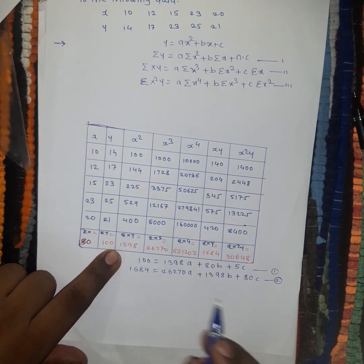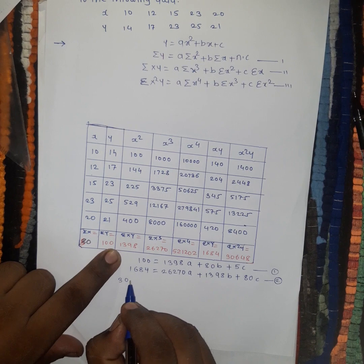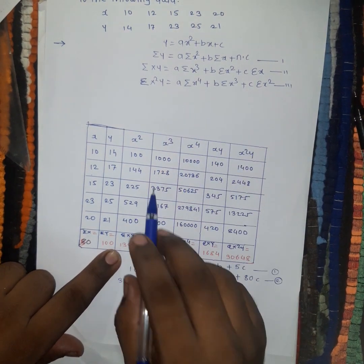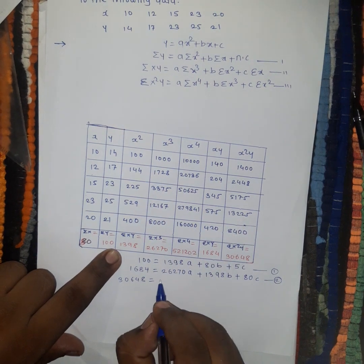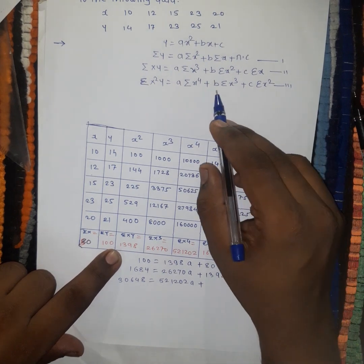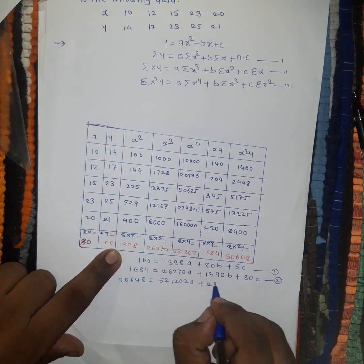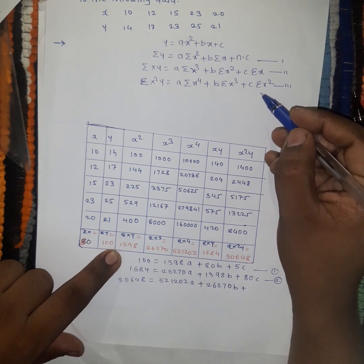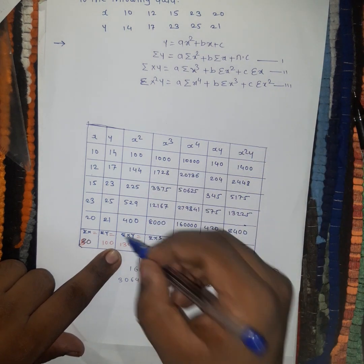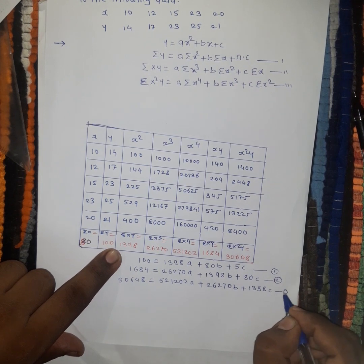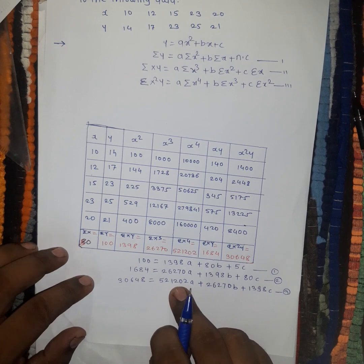The third equation uses summation x squared y, which is 30,648. So: 30,648 equals a times summation x to the 4th, plus b times summation x cubed (26,270), plus c times summation x squared (1398). This is equation number three.